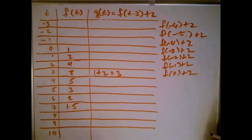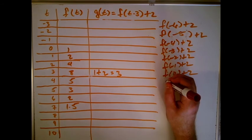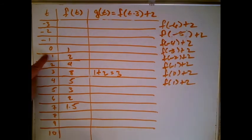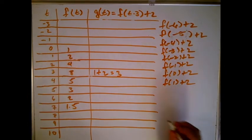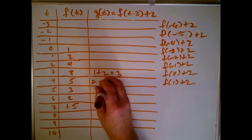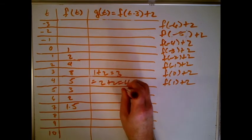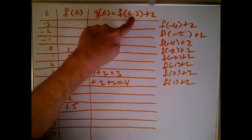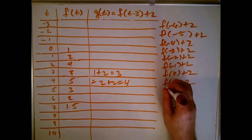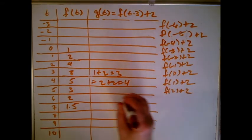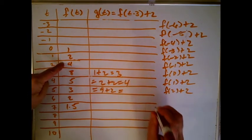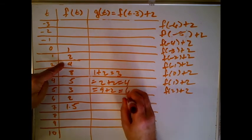Next, plugging in t = 4 gives f(1) + 2. We know f(1) = 2, so that's 2 + 2 = 4. Then t = 5 gives f(2) + 2. We know f(2) = 4, so that's 4 + 2 = 6.